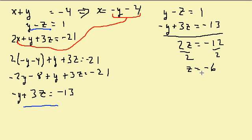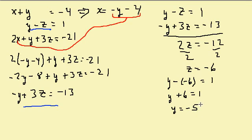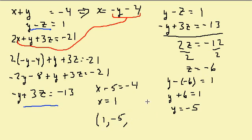Now I take z equals negative 6 and plug it into y minus z equals 1: y plus 6 equals 1, so y equals negative 5. Then I take y equals negative 5 and plug it into the first equation x plus y equals negative 4: x plus negative 5 equals negative 4, so x equals 1. My solution is (1, negative 5, negative 6), and that's all of solving three equations and three unknowns.